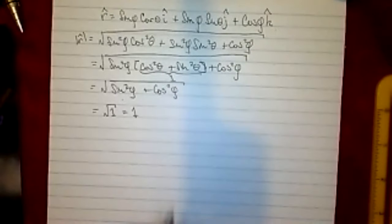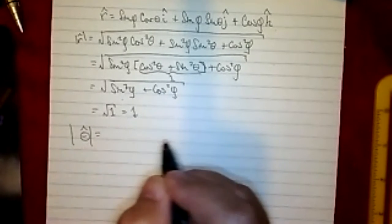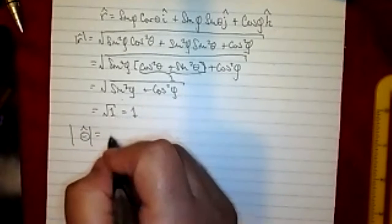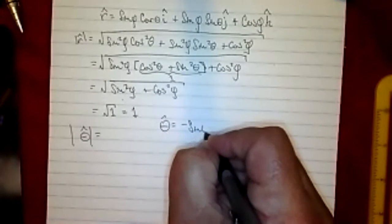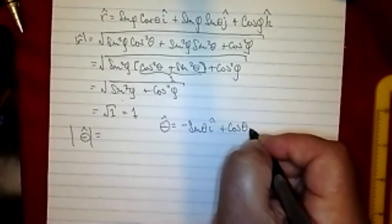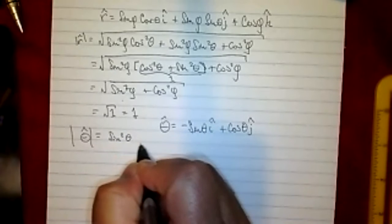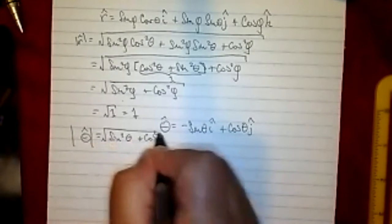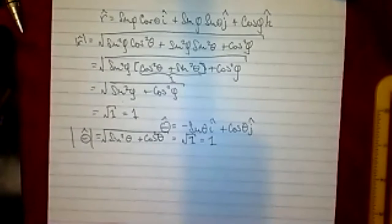Theta hat serves double duty here, covering both spherical coordinates and cylindrical coordinates. Theta hat was negative sine theta î plus cosine theta ĵ — it only has two components. Squaring those gives sine squared theta plus cosine squared theta. Taking the square root, since sine squared plus cosine squared equals one, we get the square root of one, which is just one. So theta hat is also a unit vector.